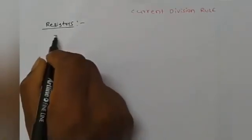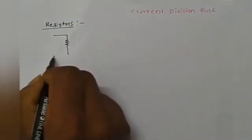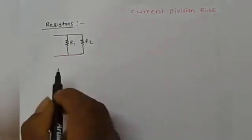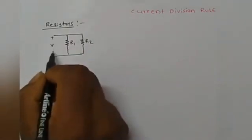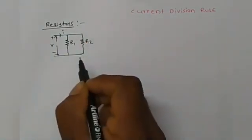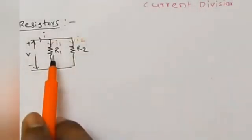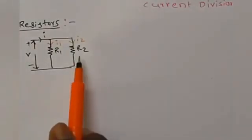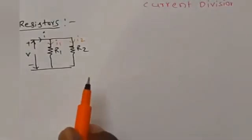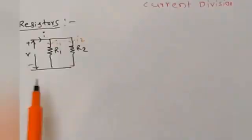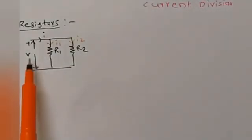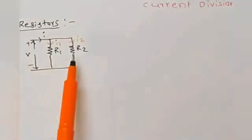For example, two resistors R1 and R2 are connected in parallel. A voltage V is applied to the circuit and a total current I is flowing. From resistance R1, current I1 is flowing, and from resistance R2, current I2 is flowing. Note that the voltage division rule is not applicable in a parallel circuit because the voltage across each element is the same.